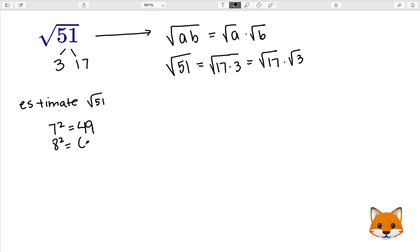Now if we look at 8 squared which is 64, this gives us a value a little bit greater than 51. So we can see that the square root of 49 is less than the square root of 51, and the square root of 51 is less than the square root of 64. We know the square root of 49 is 7 and the square root of 64 is 8.